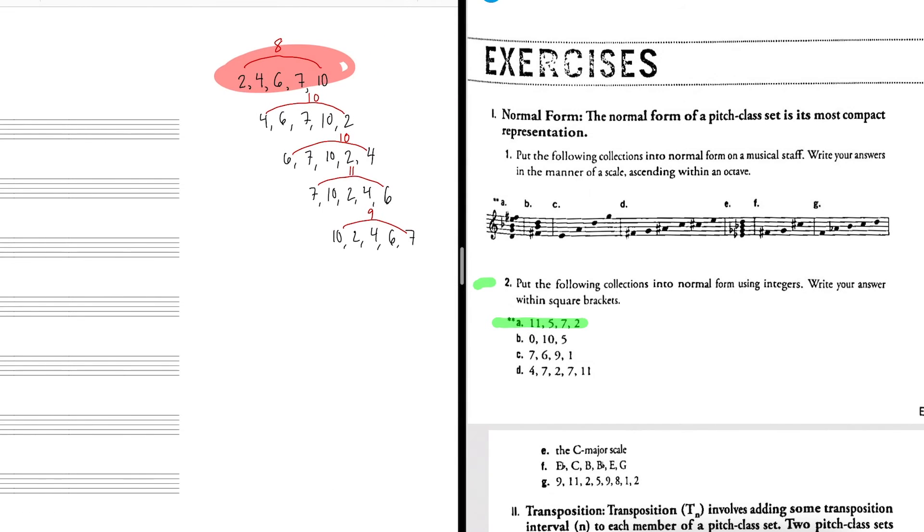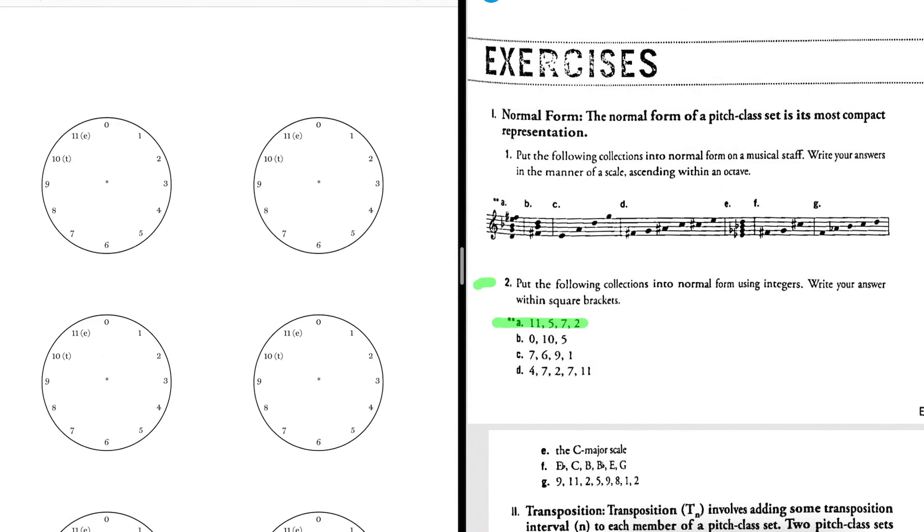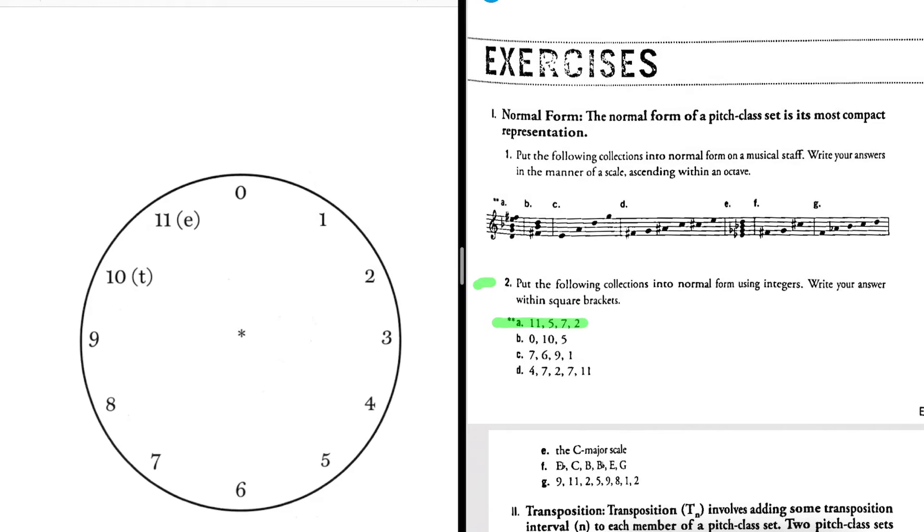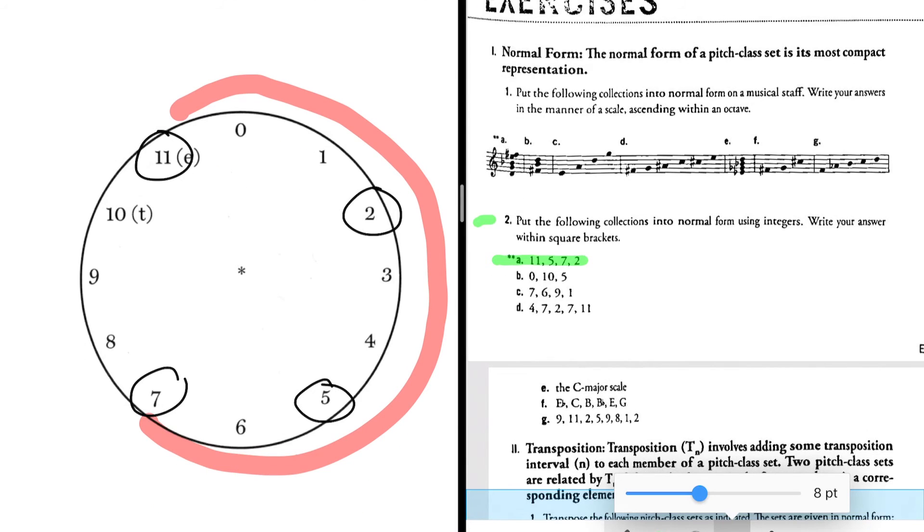Now instead of doing it the arithmetic way, I'm going to do it on the clock face. We have 11, 5, 7, 2. I can see that the biggest interval is between 7 and 11. That's the biggest interval. I don't want to use that. So I'm going to go around the clock face this way to get my most compact form. Then I write these notes in ascending order. 11, 2, 5, 7.